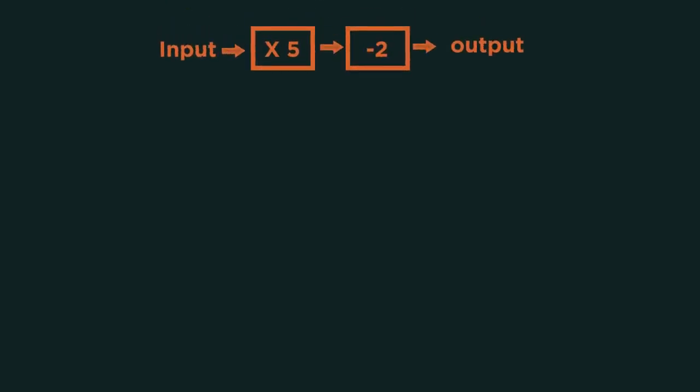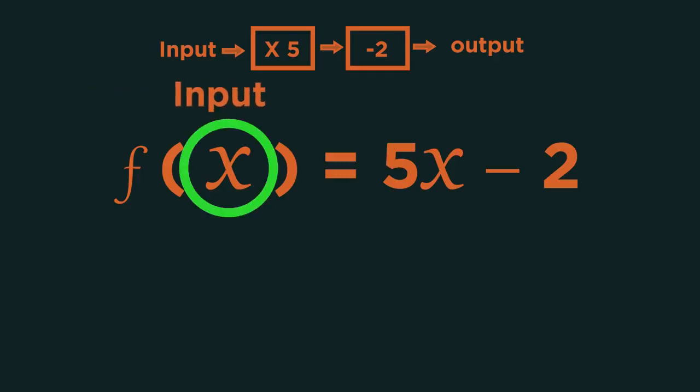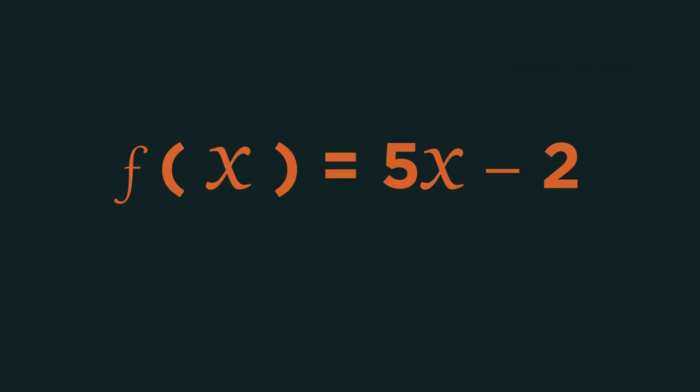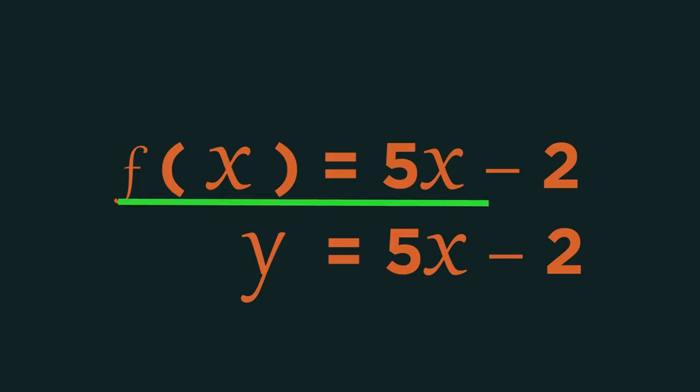Mathematically we'd write this function as f(x) = 5x - 2. Where x is our input and f(x) is our function. We say a function of x equals 5x minus 2.